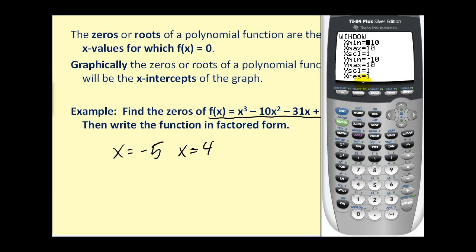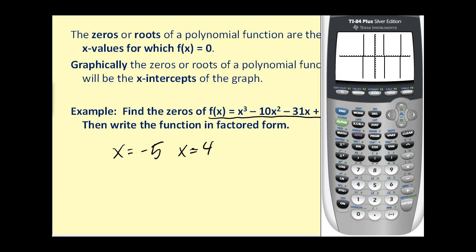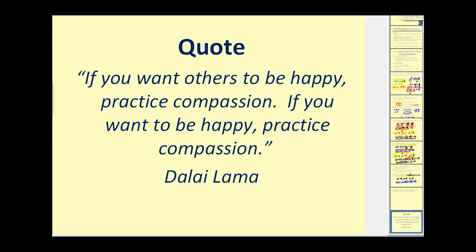We can press window and extend the x-axis — let's go from negative 15 to positive 15. That makes a difference: the third zero, originally off the screen, is now visible, and we can see x equals 11. Thank you for watching and have a good day.